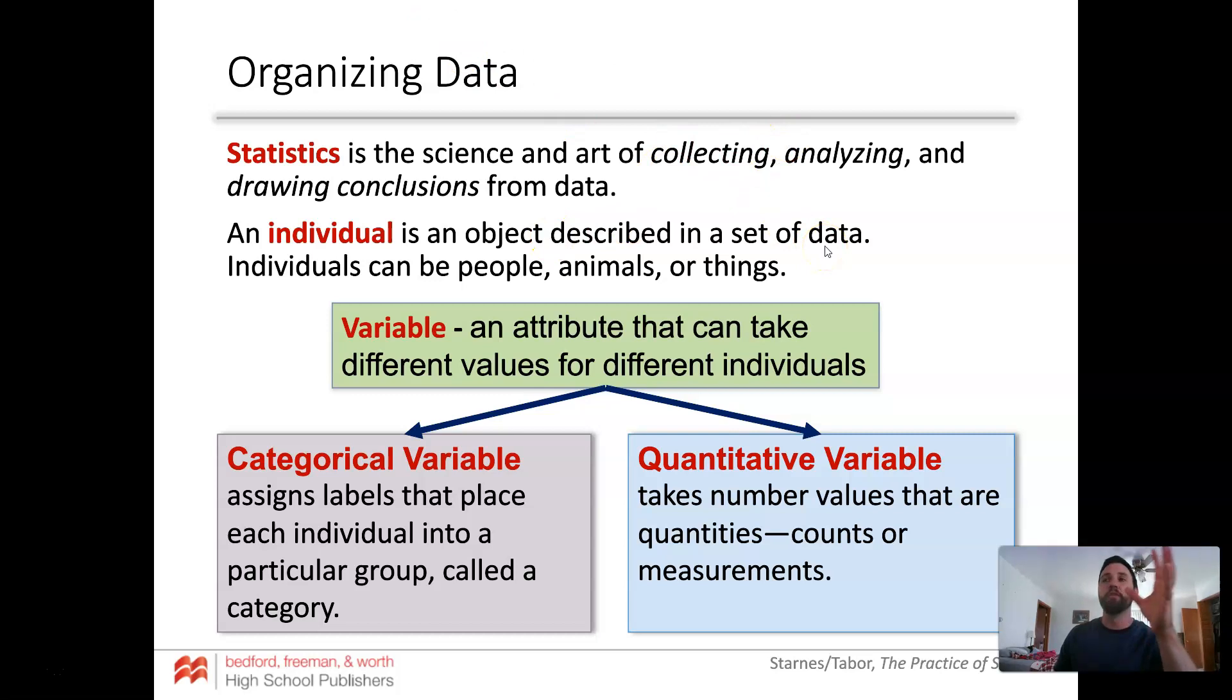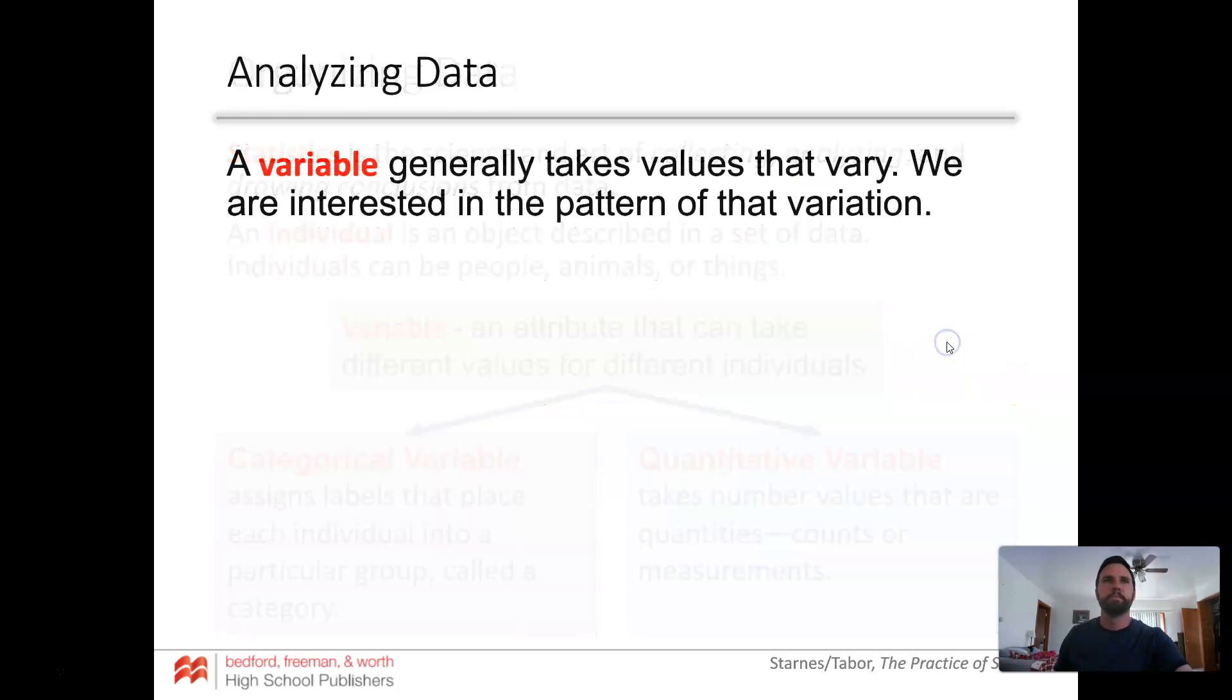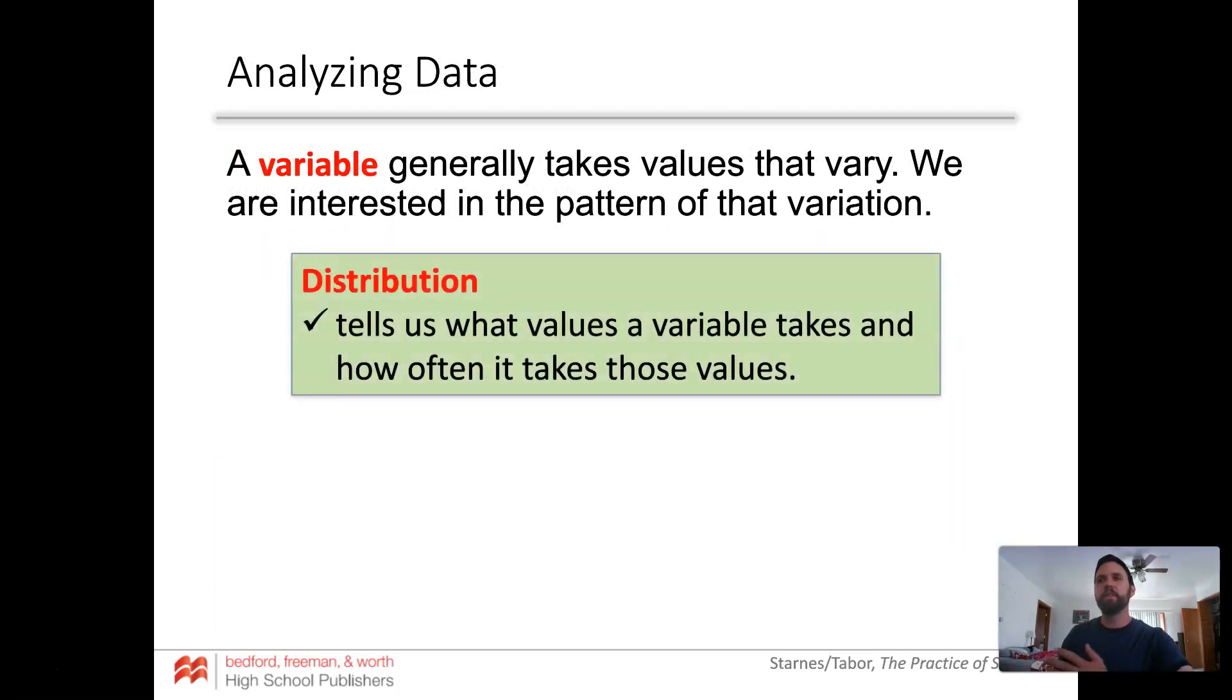Makes sense. Categorical categories you can't make into a number. Quantitative is a number like your height, you can get an actual number for that. Now when we look at variables, we're going to be looking for a pattern to emerge. The biggest term we're going to use a lot is called distribution. Distribution tells us what the shape of all the data looks like, how often different values occur.